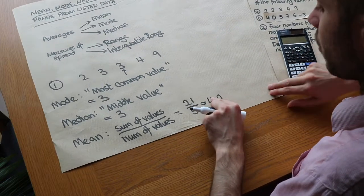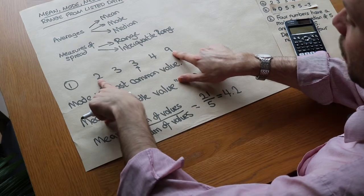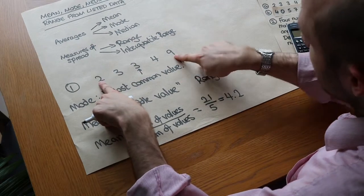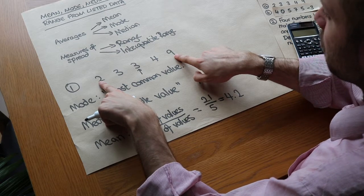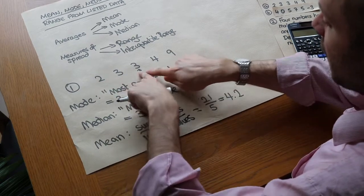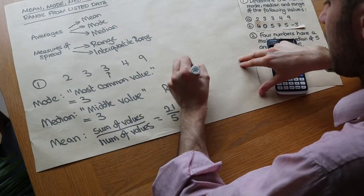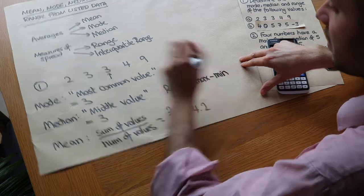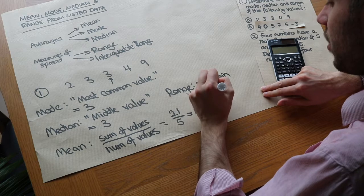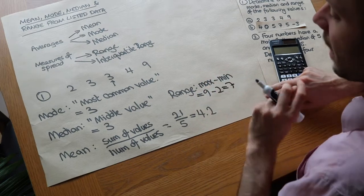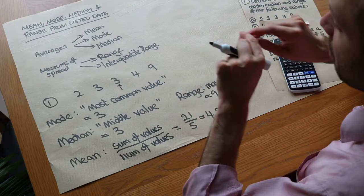And we finally want the range. The range is basically like the width of the data - the distance between the smallest value and the largest value. That seems like a sensible measure of spread because it's showing how spread out it is by giving you the width of the data. So we just do the maximum minus the minimum to get that distance between the first and last values: 9 minus 2 which equals 7. Just to note that range is not an average, it's measuring spread.